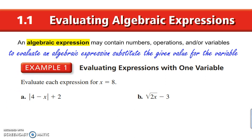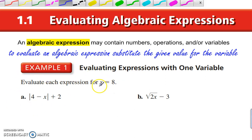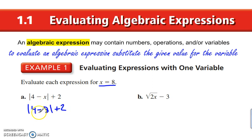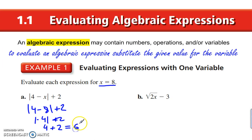Pretty simple here. We have x equals 8, and we are evaluating the expression, so we're going to plug in 8 for x. We have the absolute value of 4 minus 8, plus 2. The absolute value bars are a grouping symbol, so that happens first: 4 minus 8 is negative 4. The absolute value of negative 4 is positive 4, plus 2 is 6.